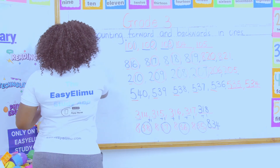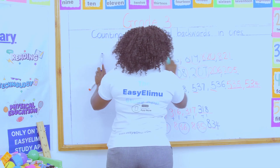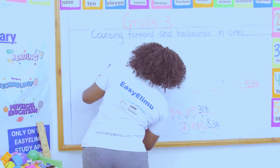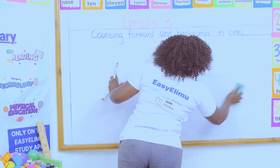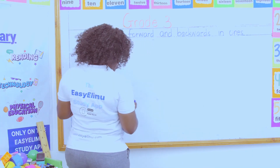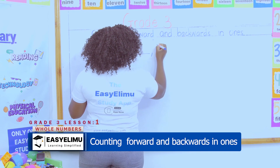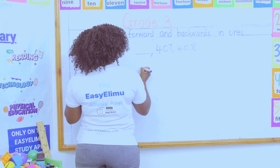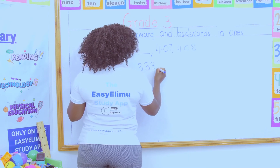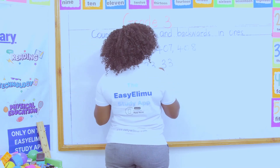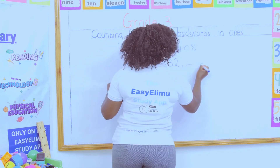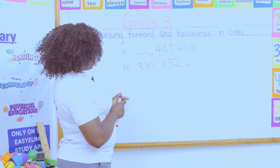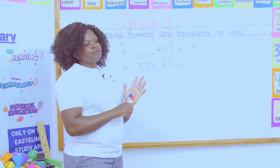When you go home today, I only have two questions for you — not more than two. These questions are still about counting in ones, both forward and backward: the first is 407, 407, 408 with a missing number; the second is 333, 332, and a missing number. Try these and see if you understood what we said. Any questions? Any problem?